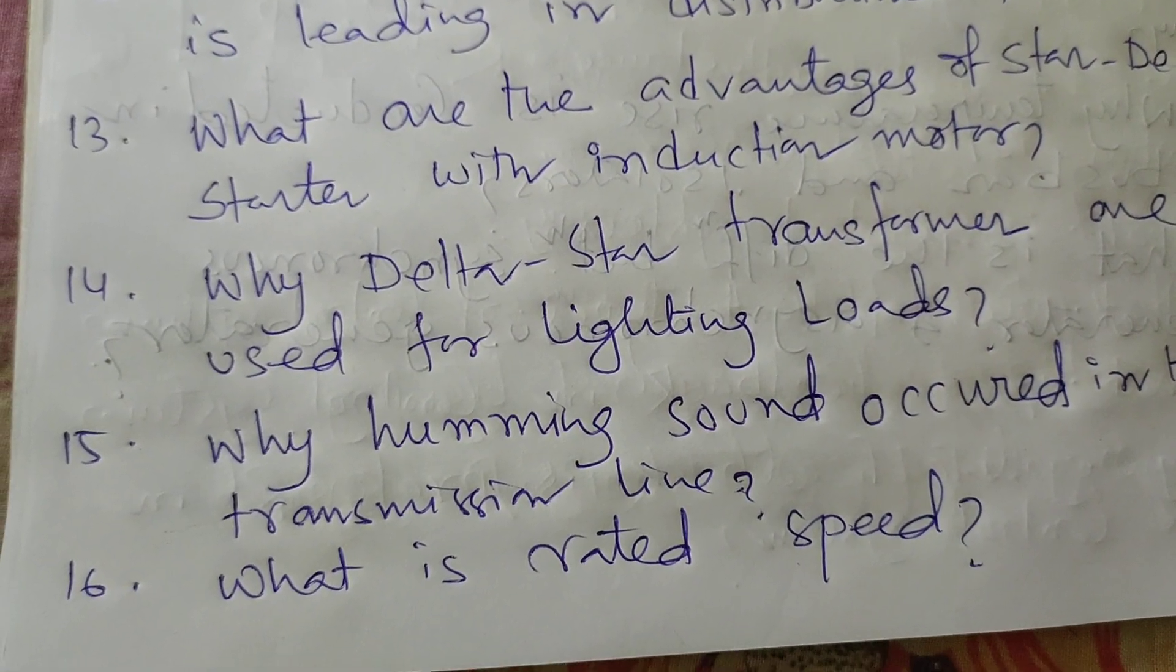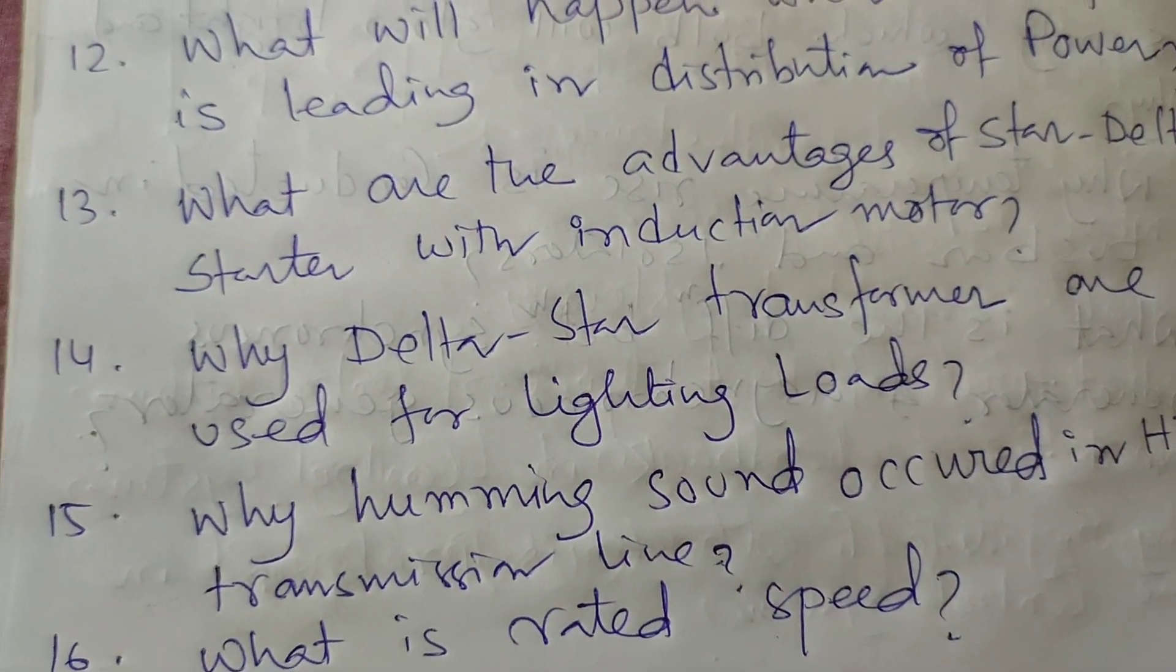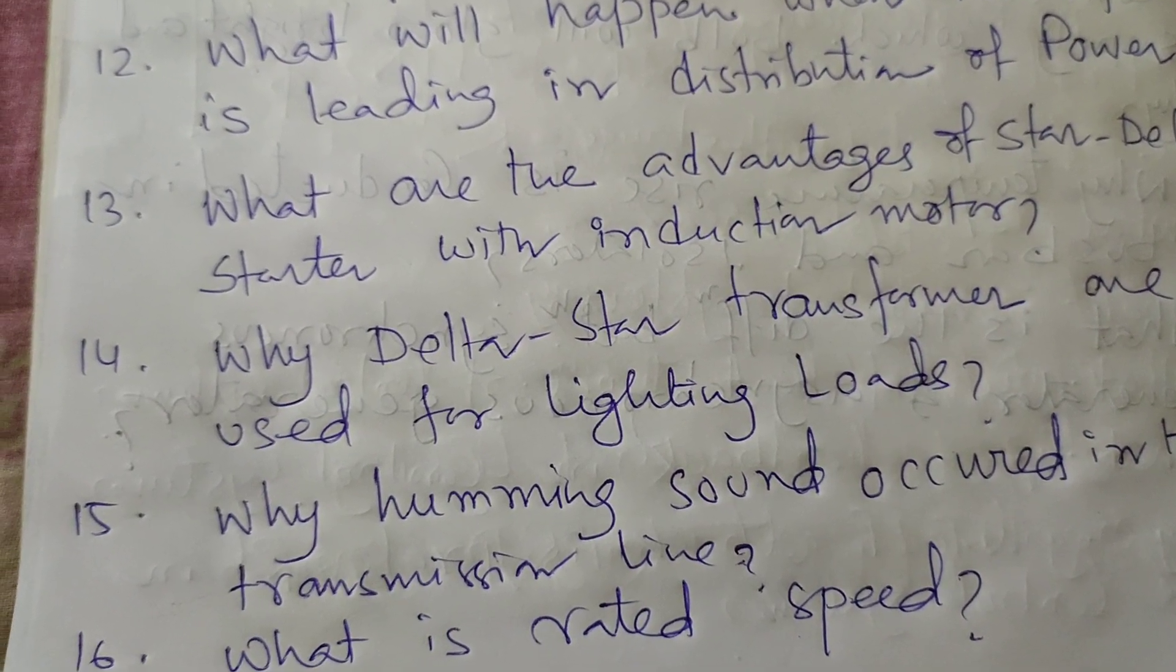The last question in this series: What is rated speed? The speed of the motor when it takes normal current is called the rated speed. It is the speed at which any system takes small current and gives maximum efficiency.